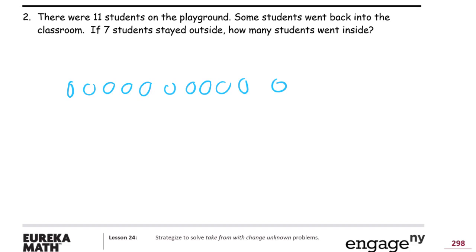Some went back into the classroom. We don't know how many, but 7 stayed outside. So I could just cross out 7 and see how many were left, right? 1, 2, 3, 4, 5, 6, 7.